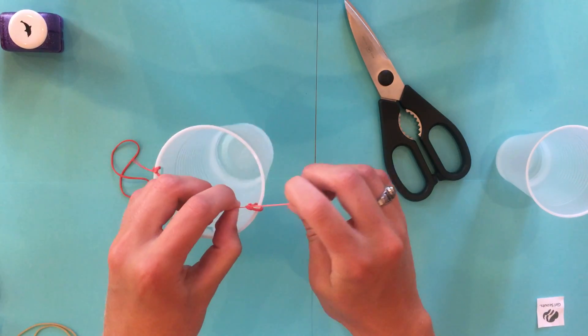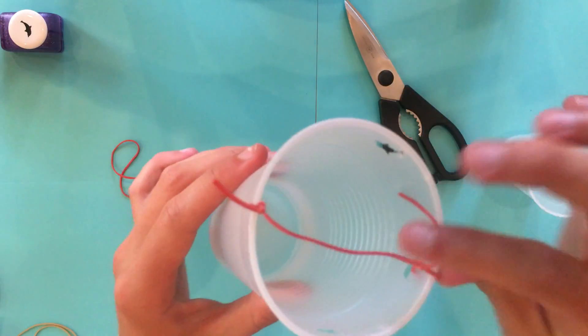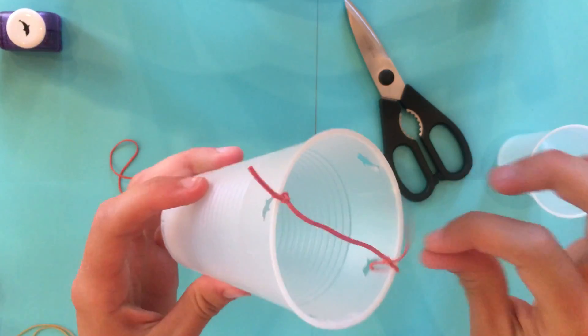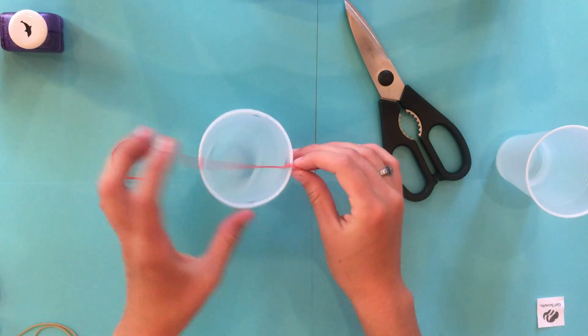All right. See? It should just look like this. One through one end, here's the other end. You can cut the extra rubber band part too.